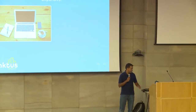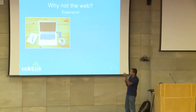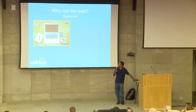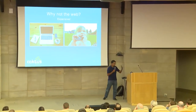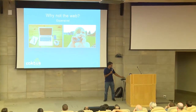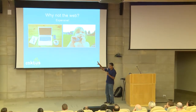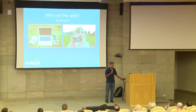Number one is expense. In order to access the web you might need a fancy computer or a fancy smartphone. Whereas to access SMS, you need a phone — like a basic phone, which is not an expensive thing. The cost of smartphones and laptops has definitely come down, and the gap is probably narrowing, but the expense of a regular old phone is still much, much less than a computer.